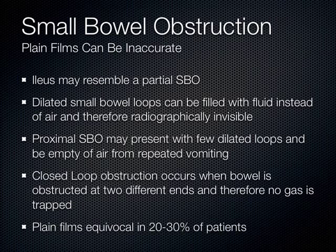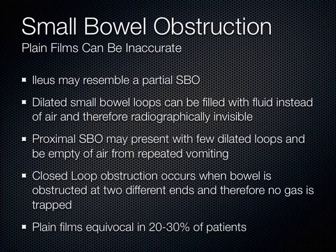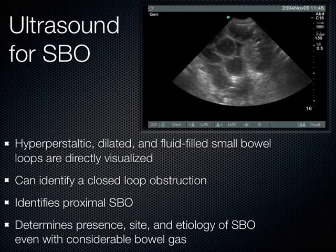In a closed loop obstruction — where bowel is twisted on both sides and the loop in the middle is obstructed — there's no air between the two ends. Those you classically miss on x-ray. A proximal obstruction where the patient vomits all the air also gets missed. Ultrasound is really good at picking up both. It has much better test characteristics than x-ray, though not as good as CT scan.